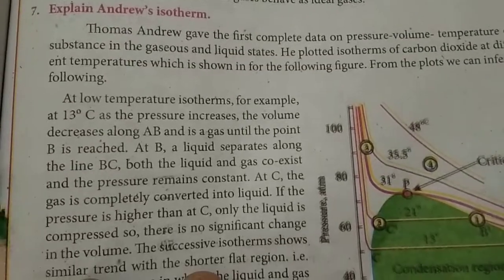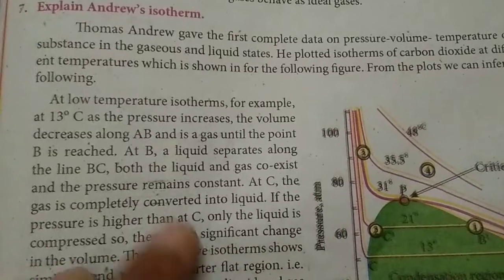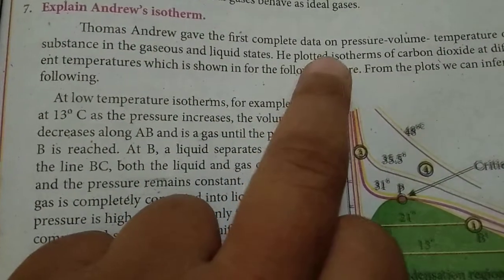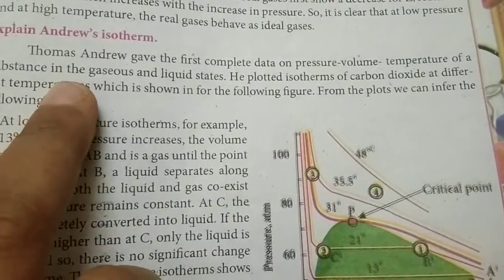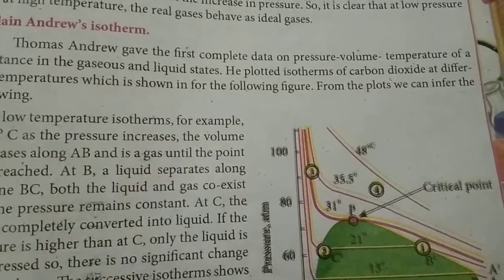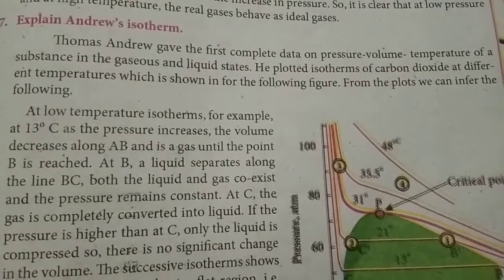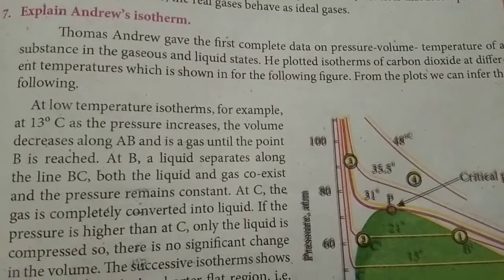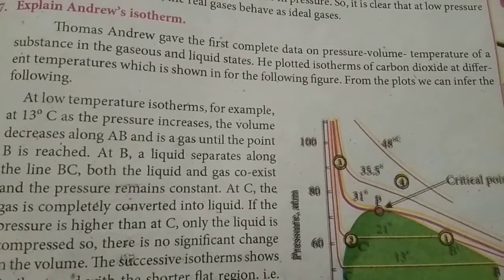Welcome to Helen Chemistry Channel. In this session, we are going to see the topic Andrew's isotherm. Thomas Andrew gave the first complete data on pressure-volume-temperature of a substance in the gaseous and liquid states. He plotted isotherms of carbon dioxide at different temperatures, which is shown in the following figure. From the plots, we can infer the following.